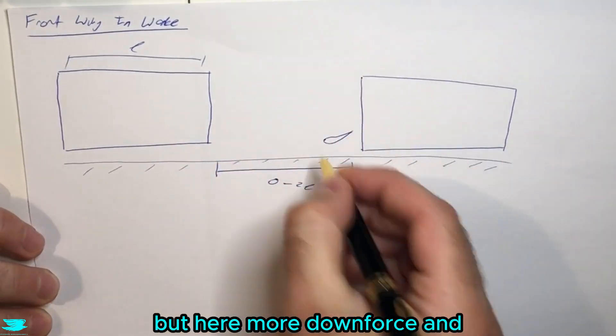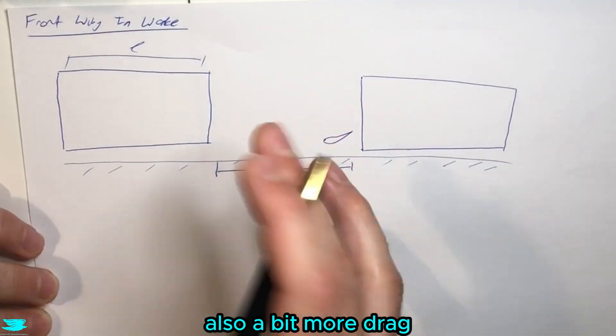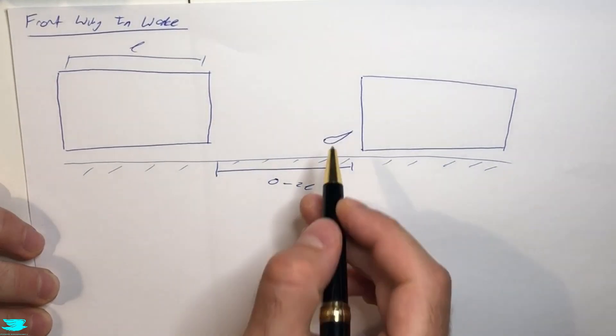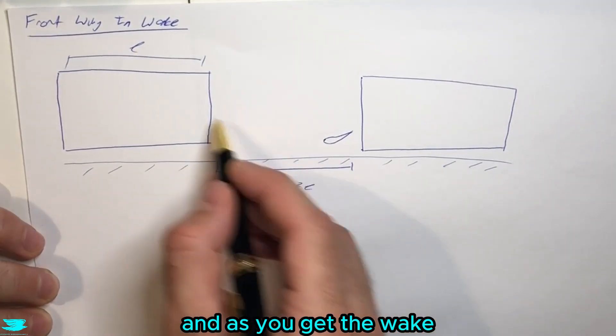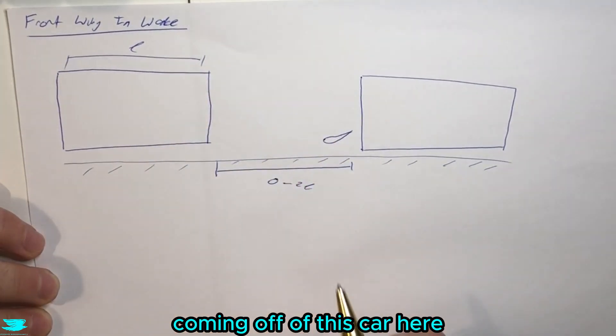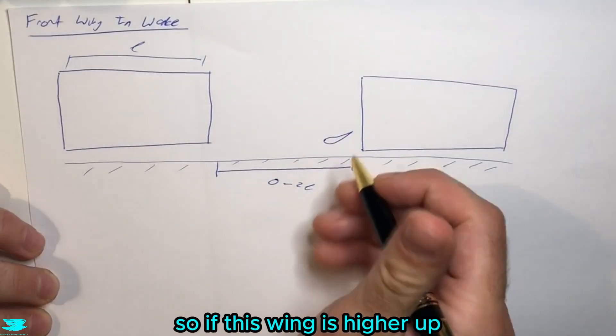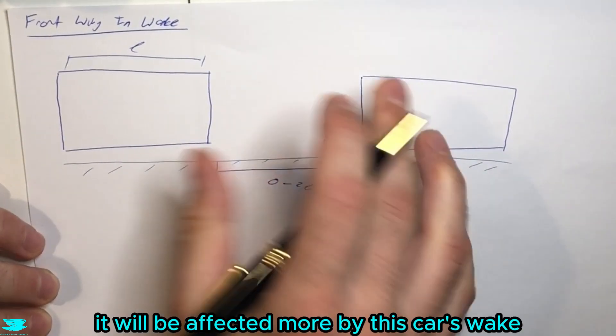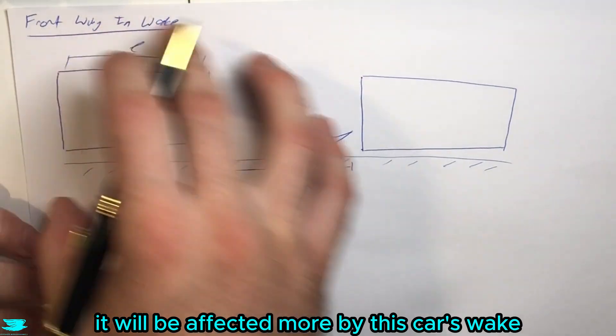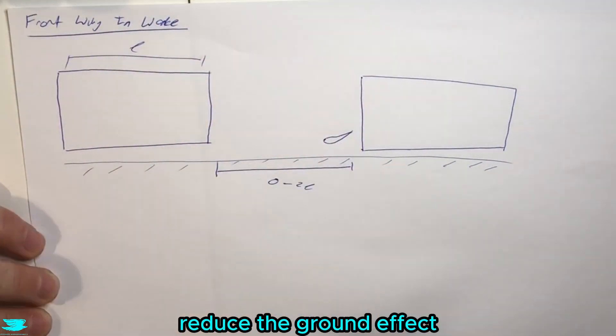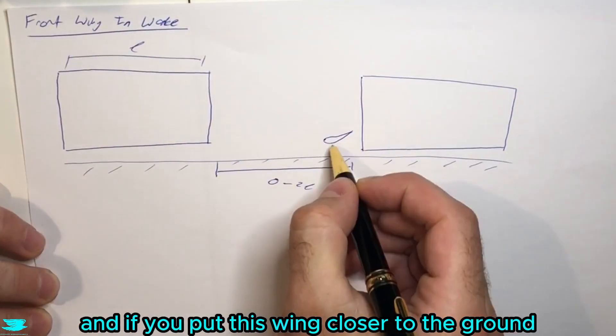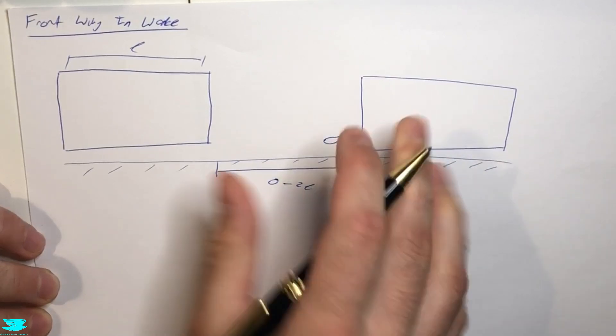The wing will produce more downforce, or lift depending on how it's cambered, but here more downforce and also a bit more drag. As you get the wake coming off of this car here, that actually messes with this ground effect. If this wing is higher up, it will be affected more by this car's wake than the ground effect and actually sort of reduce the ground effect that you'll be getting.